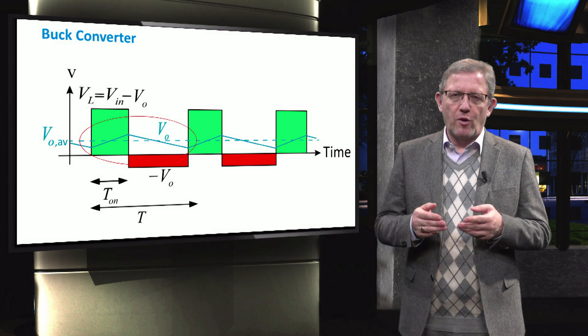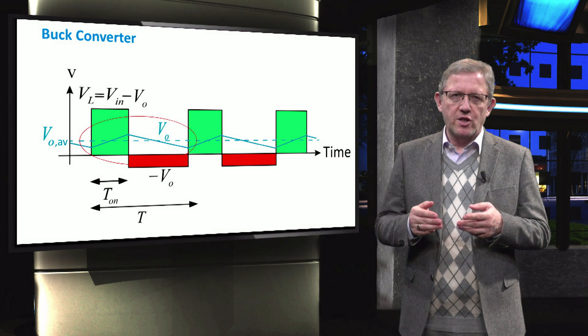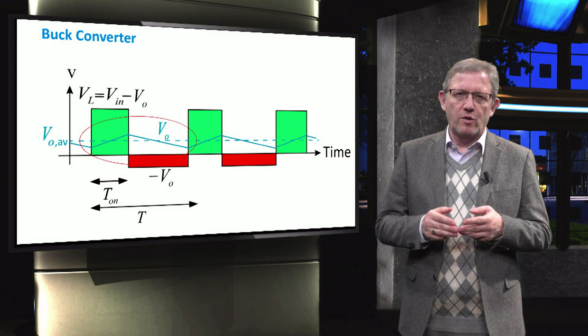The average output voltage, V_output_average, is a product of the duty cycle and the input voltage.